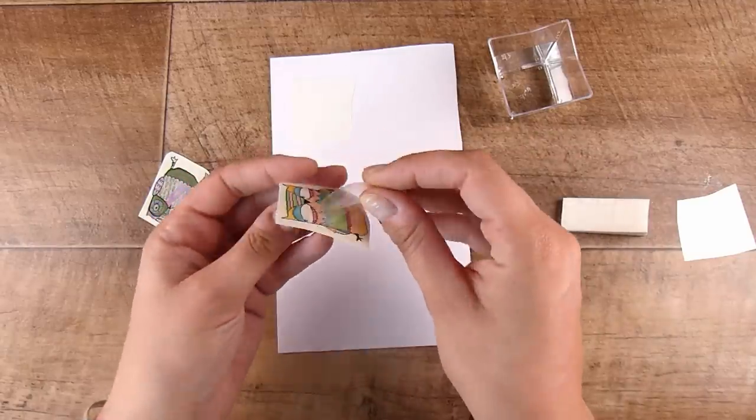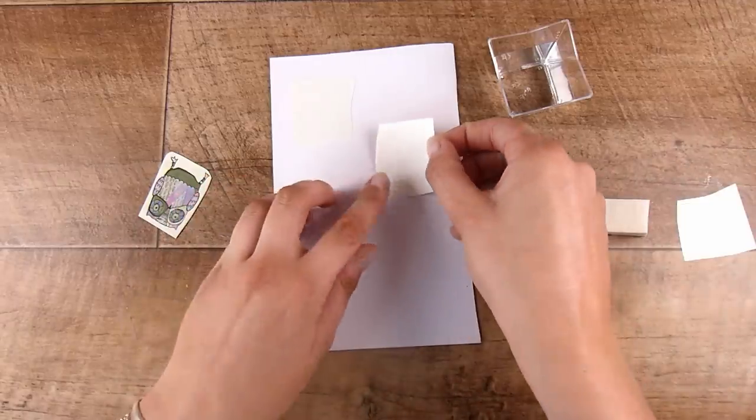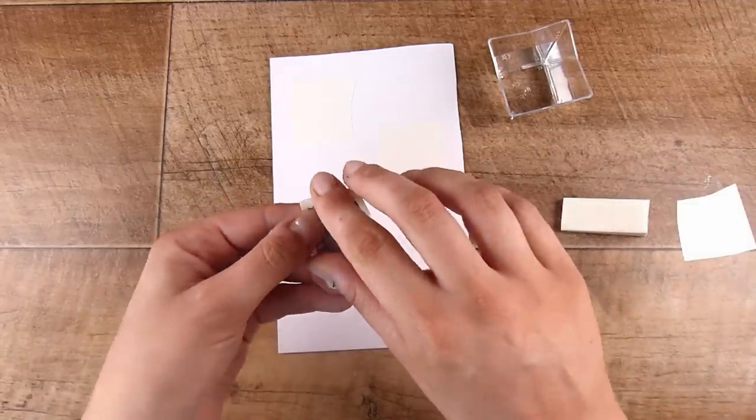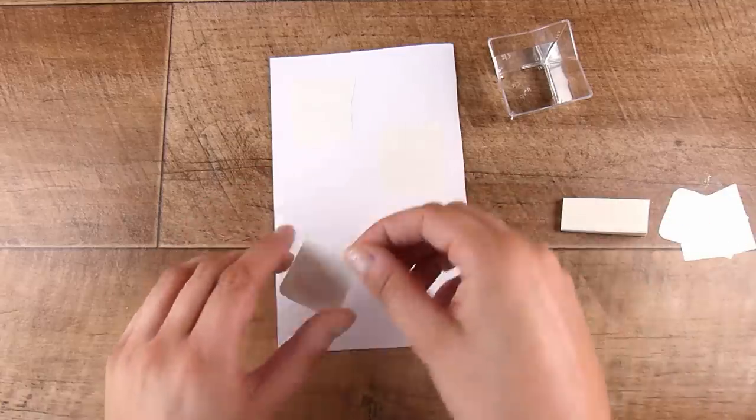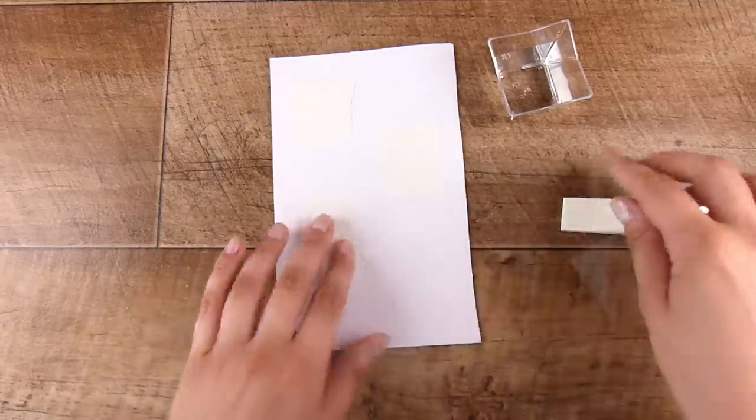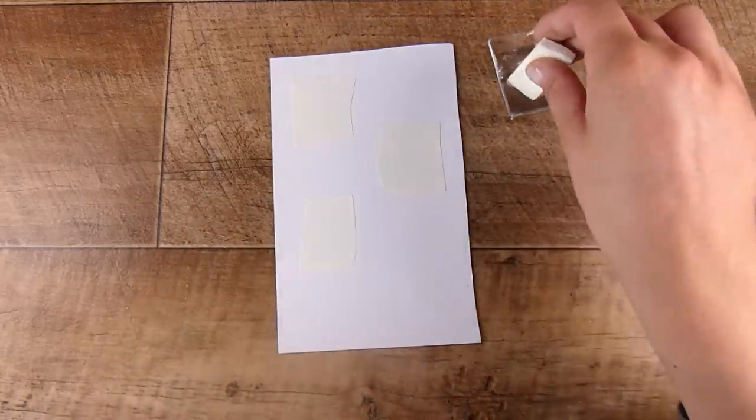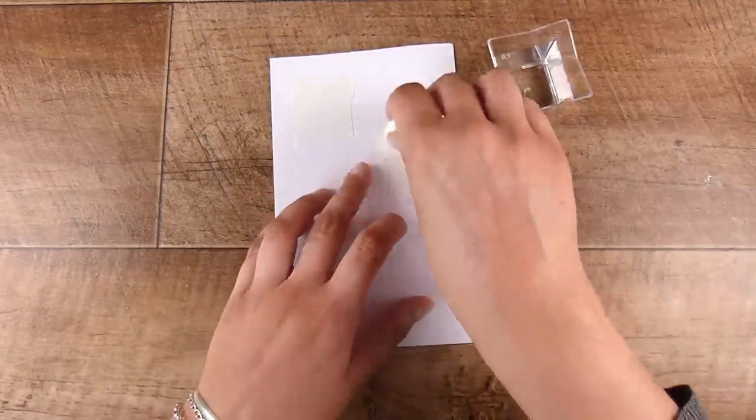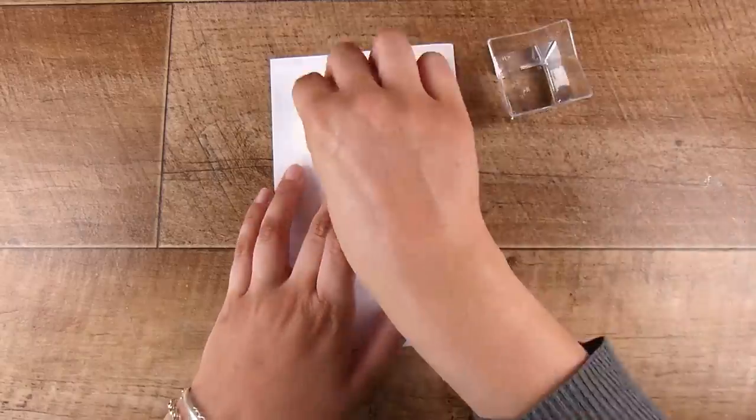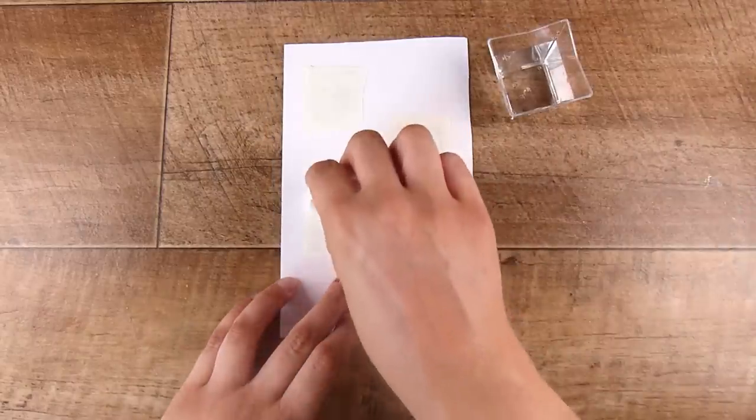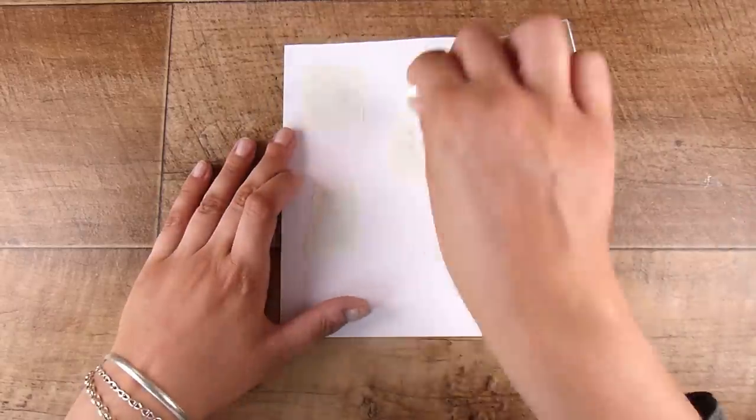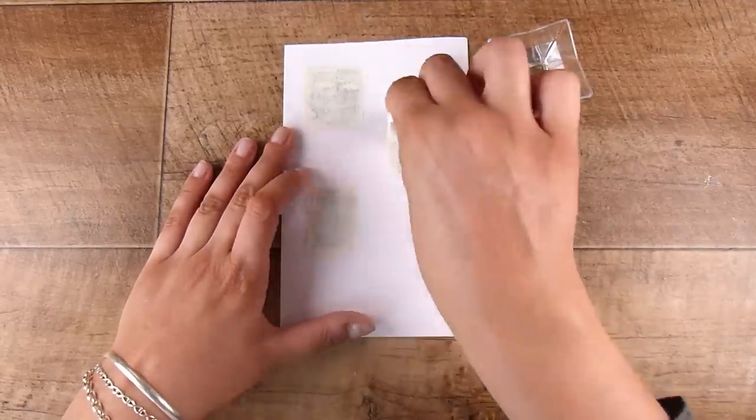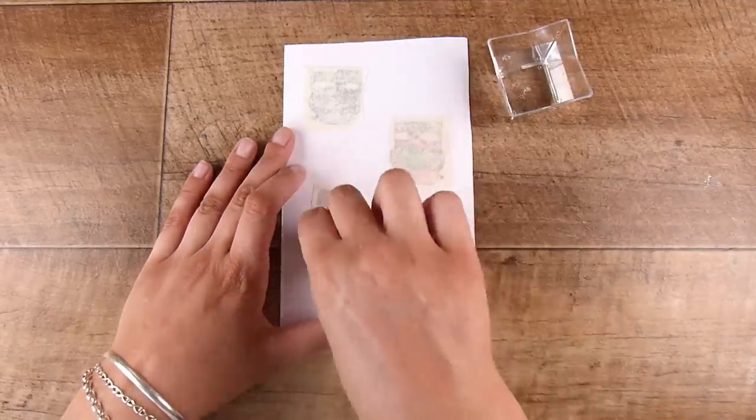All you need to do is peel off the front plastic layer and put them face down onto your project. You could do this straight down onto your card base or project. Then you use a damp sponge with just water, and you sponge the back of these.